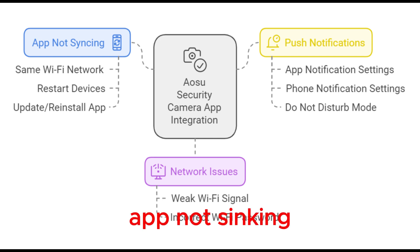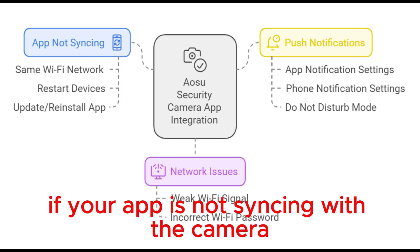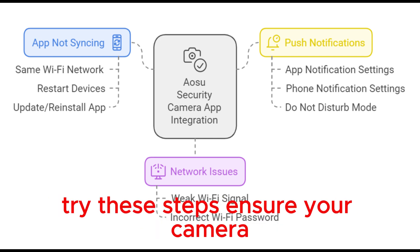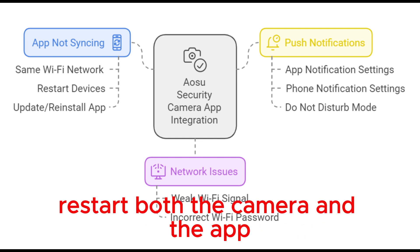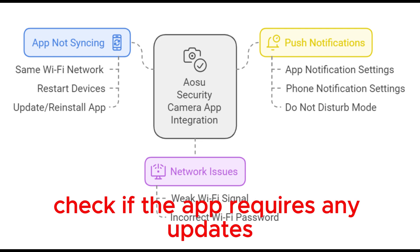App Not Syncing: If your app is not syncing with the camera, try these steps. Ensure your camera and phone are connected to the same Wi-Fi network. Restart both the camera and the app. Check if the app requires any updates.